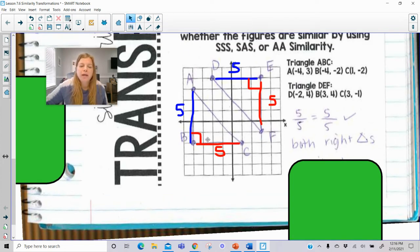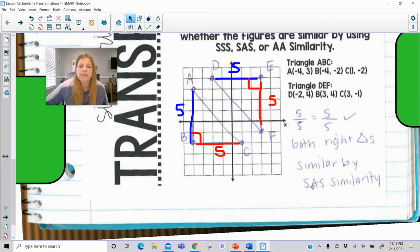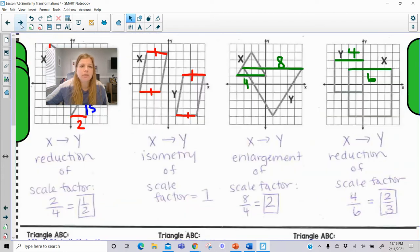Therefore, you have one pair of congruent angles. Definitely proportional sides, I mean they're the same. And so these are definitely similar by side, angle, side. And we would call this an isometry because they are the same.